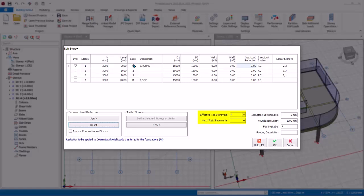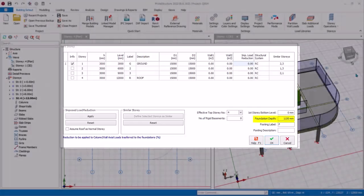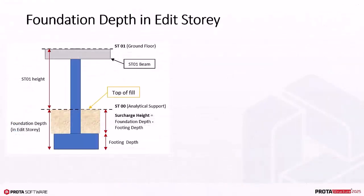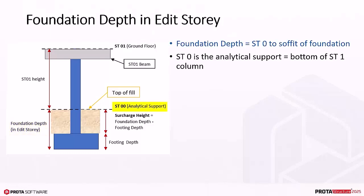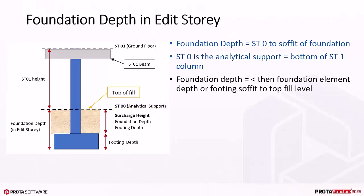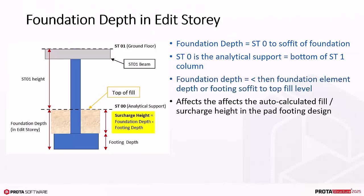For example, if there is one basement modeled as story one, then Rigid Basement should be set to one, and no wind load will be auto-applied to that story. Foundation Depth is best explained by referring to the diagram. Foundation depth is the depth allocated for the foundation elements below the ST0 level. ST0 is the analytical support, which is always at the bottom of the ST1 column. The recommended value should be at least equal to the foundation element depth, or the depth measured from the footing soffit to the top of fill level. Foundation depth affects the auto-calculated filler surcharge height in pad footing design.